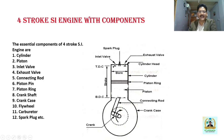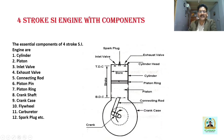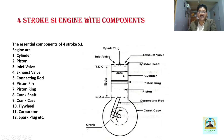We have two valves: inlet valve and exhaust valve. Through the inlet valve, the air-fuel mixture is drawn into the engine cylinder, and through the exhaust valve, the burnt air-fuel mixture is expelled to the atmosphere. Then you have a connecting rod, which connects the piston with the crankshaft. The connecting rod is connected to the piston by means of a piston pin or gudgeon pin. Piston rings are provided to prevent the leakage of gas from the cylinder to the crankcase.